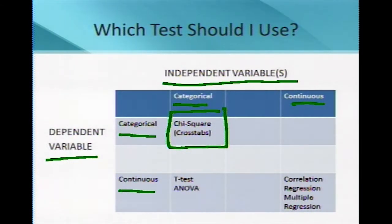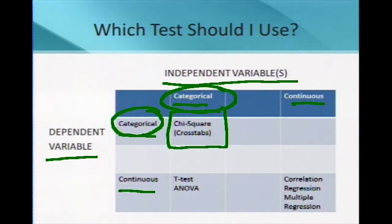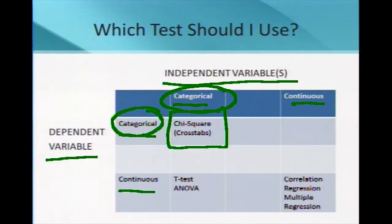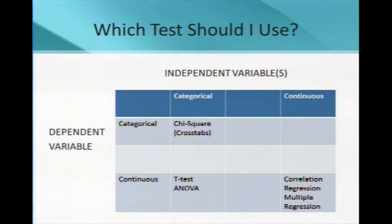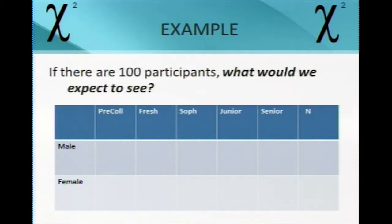The chi-square also has an old name called cross-tabulation, sometimes referred to as cross-tabs. When we think about using the chi-square, we notice that both of the variables involved are categorical in nature. This is important because sometimes we get into situations when we only have two categorical variables — there could be all kinds of different categories in each variable. We're looking to see if these variables are independent from each other, meaning they don't have dependency. That is essentially what our chi-square is.